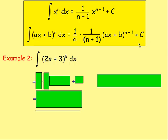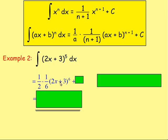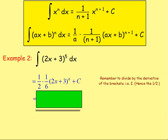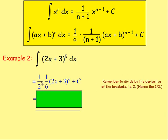Example 2: integrate 2x plus 3 to the power of 5. You add 1 to the power, so 2x plus 3 to the power of 5 goes to 2x plus 3 to the power of 6. You divide by that new power — 6. However, because we have 2x plus 3 in brackets, you differentiate what is inside the brackets, which gives 2, and you also divide by that. So that's 1 over 2 at the front. Simplifying, 1 over 2 times 1 over 6 is 1 over 12. So the answer is 1 over 12 times (2x plus 3) to the power of 6, plus c.